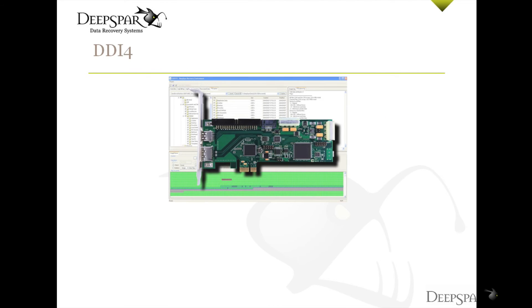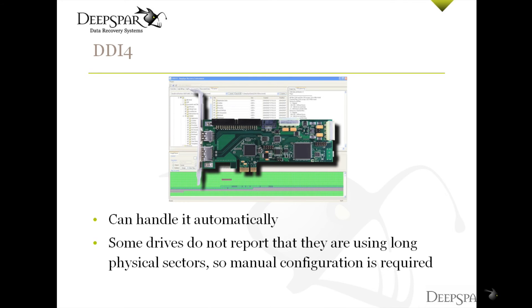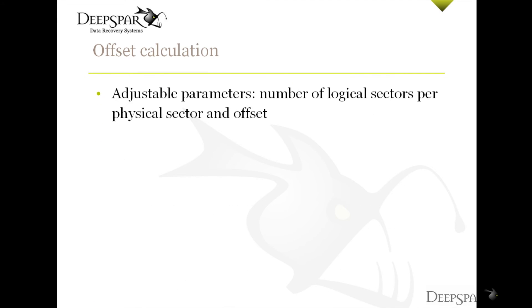In most cases, the DeepSpar disk imager will handle this automatically in the most efficient manner. However, some drives do not report that they are using long physical sectors, and in those cases manual configuration is required. The two adjustable parameters are the number of logical sectors per physical sector, and the offset.